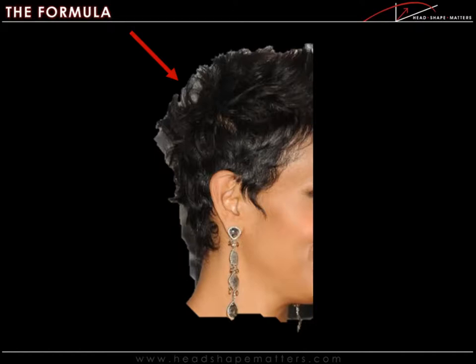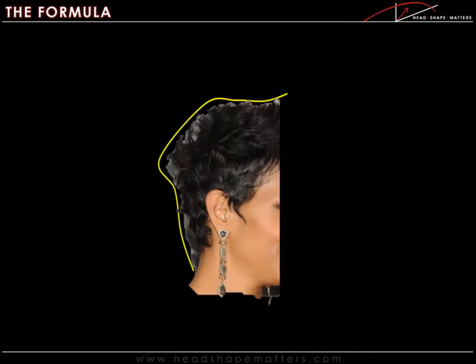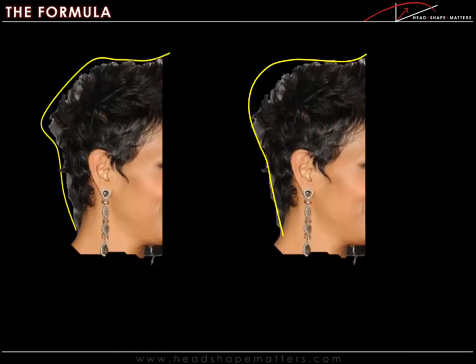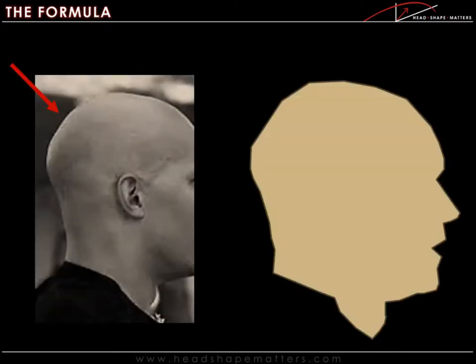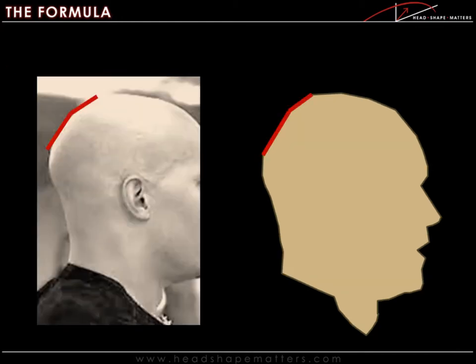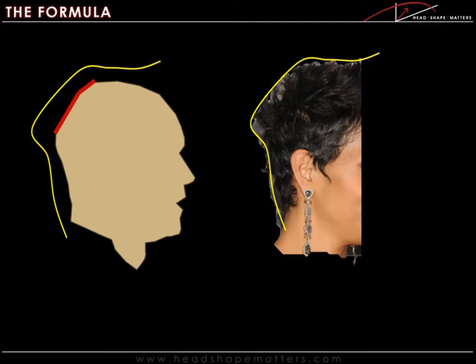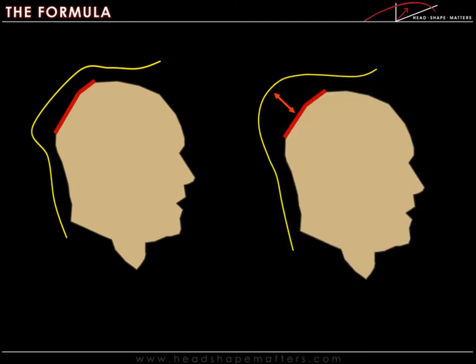Let's say we have a client come in and they say my hair is really flat in the crown. I want it more rounded and more volume. If we take the time to look at that person's head shape, we may find that they're very flat in that area, causing the haircut to do the same.